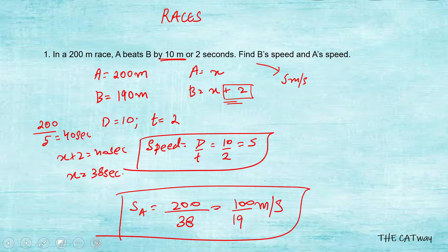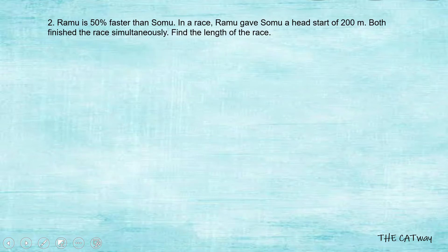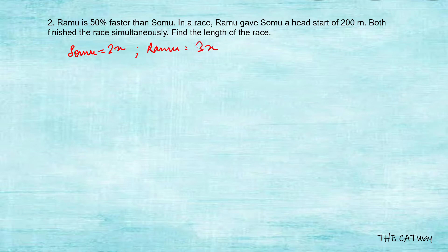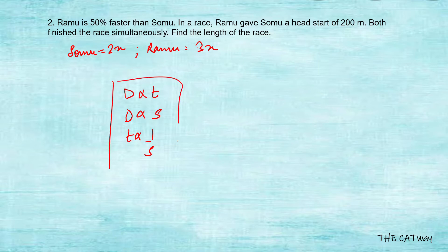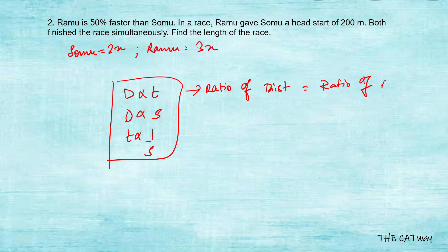The second question says Ramu is 50 percent faster than Somu. Let the speed of Somu be 2x and the speed of Ramu be 3x. We will use what we learned in the first video: distance is directly proportional to speed when time is constant, and time is inversely proportional to speed when distance is constant. So the ratio of distances equals the ratio of speeds when time is constant.